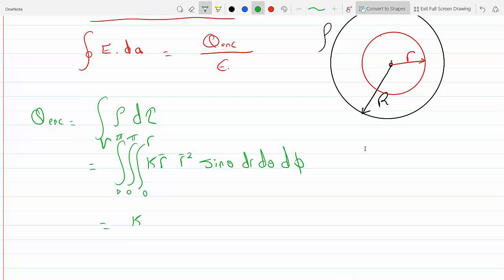And so if we evaluate this we get K, let's put a hat to distinguish this from the bound, so this is r cubed dr from zero to r.